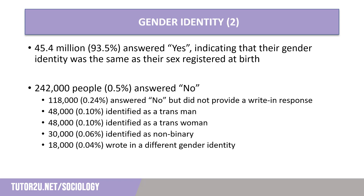Of those that did respond, overwhelmingly people answered yes — their gender was the same as that registered at birth. In total, 93.5% of the population over the age of 16 answered this way. Just 242,000 people answered no. A further option was available for people to provide more information; of those, almost half did not provide a written response as to how they identified. 48,000 responded as a trans man, while the same number identified as trans female. A further 30,000 identified as non-binary, and 18,000 wrote in a different gender identity to those already mentioned.